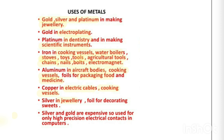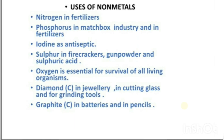Silver is used in making jewelry, and thin silver foil is used for decorating sweets. Silver and gold are very good conductors of electricity, but since they are very expensive, they cannot be used for general electrical cables. They are used only in high-precision electrical contacts, such as in computers.